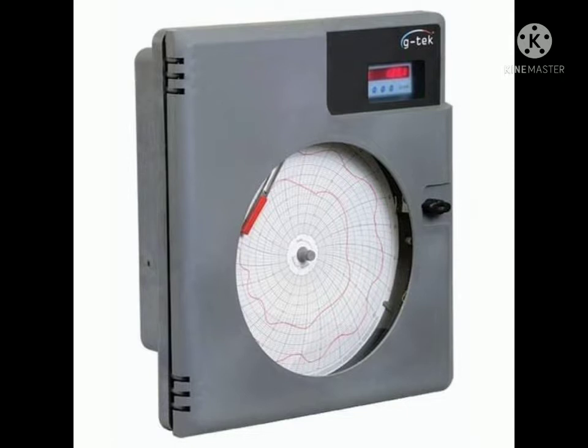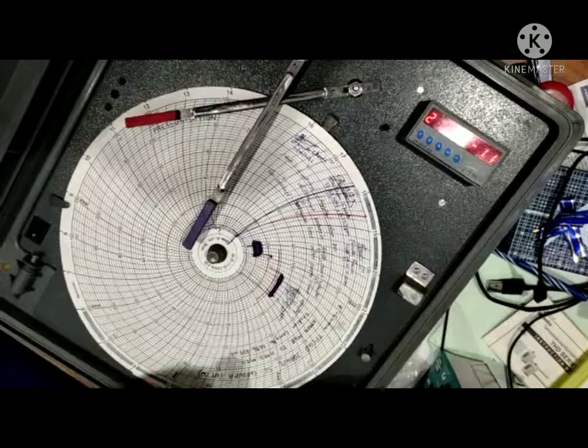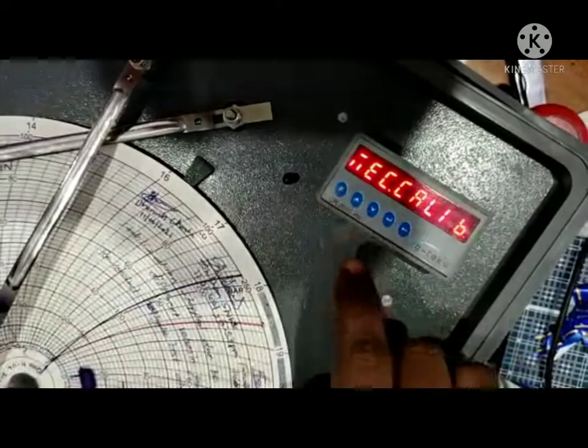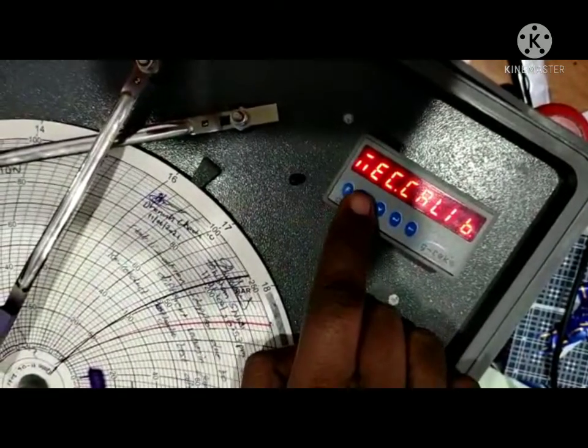Hi all, in this video we will see the mechanical calibration, that is the pen zero and span calibration of a G-Tech circular chart recorder. Press the up and down key at the same time to enter the mechanical calibration mode.